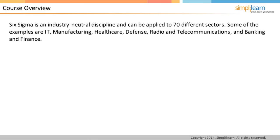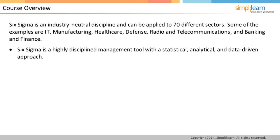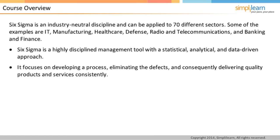Six Sigma is an industry-neutral discipline and can be applied to 70 different sectors. Some examples are IT, Manufacturing, Healthcare, Defense, Radio and Telecommunications, and Banking and Finance. Six Sigma is a highly disciplined management tool with a statistical, analytical, and data-driven approach. It focuses on developing a process, eliminating defects, and consequently delivering quality products and services consistently.